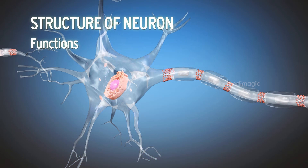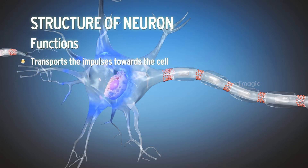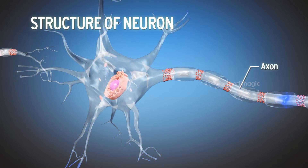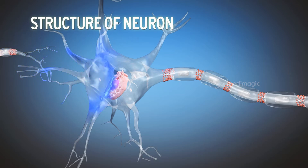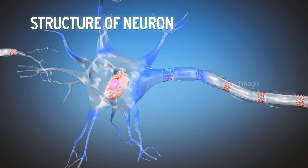Dendrites are the receptive processes of the neuron and transport the impulses towards the cell. The axon is the single long cylindrical slender projection of a nerve cell. They conduct electrical impulses away from the neuron's cell body.